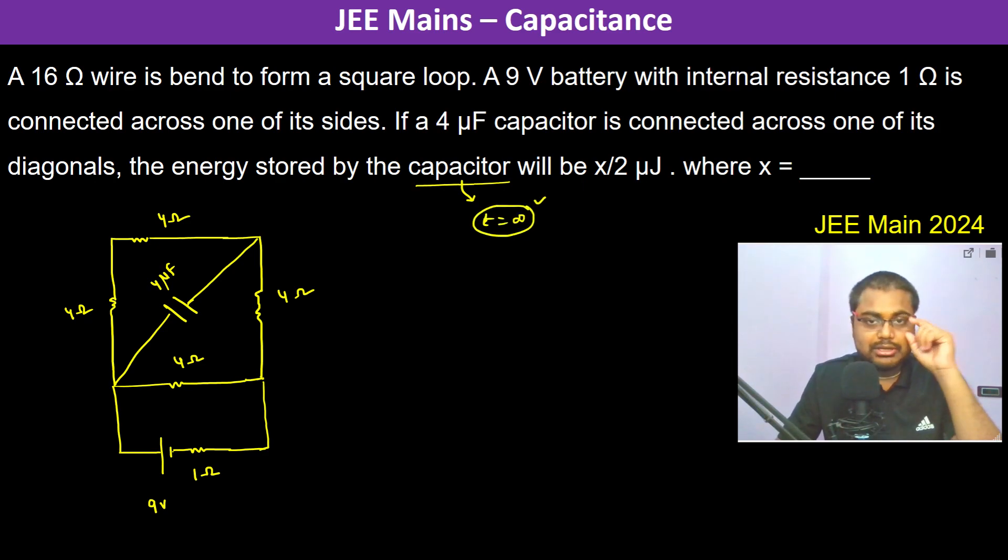But here time is not mentioned, so therefore we are going to take t equals infinity. So at t equals infinity, what happens is that the current through the capacitor becomes zero.